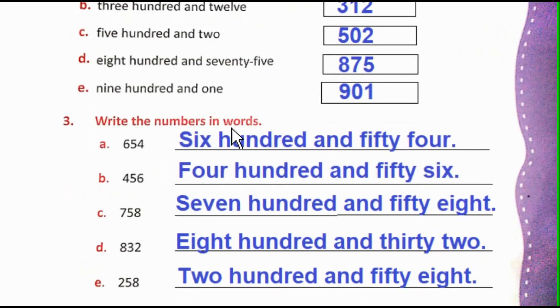Number 3, write the numbers in words. A: 654 or 654, so six hundred and fifty-four. B: 456, four hundred and fifty-six.